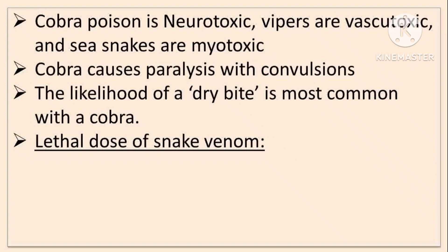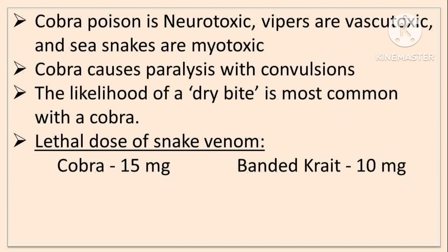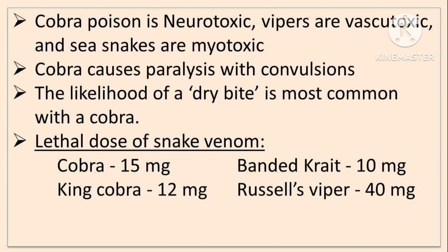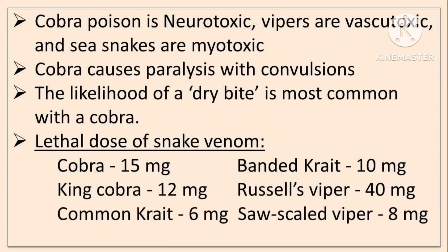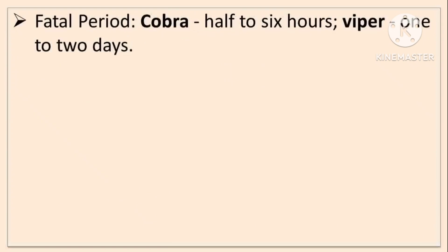Lethal doses: Cobra is 15 mg, Banded Krait is 10 mg, King Cobra is 12 mg, Russell Viper is 40 mg, Common Krait is 6 mg, and Saw-Scale Viper is 8 mg. Fatal period for Cobra is 30 minutes to 6 hours, and for Vipers it is 1 to 2 days.